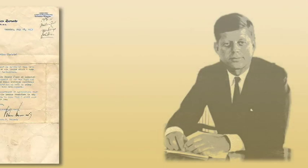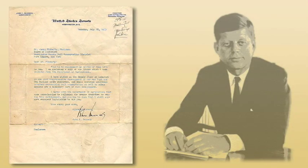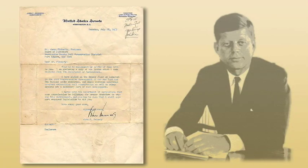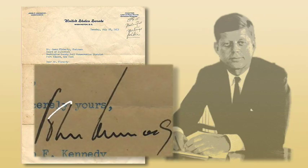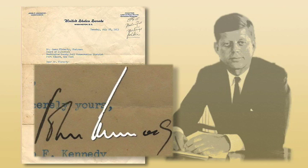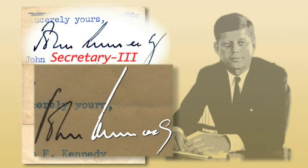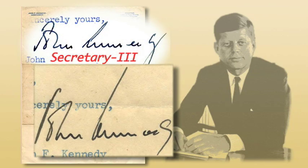This letter is a perfect example of an authentic Kennedy signature penned as a young senator in 1953. Notice the hard angle of the connection line between the O and the H. Also, even though this example shows the stuttering that Secretary III tried to imitate, it's much less pronounced and there is less space between the disconnected letters.